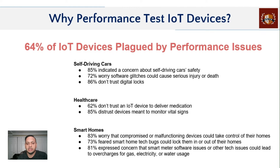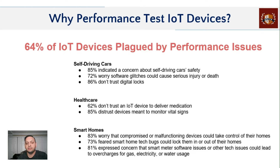For smart homes, 83% of users have expressed concern that the device could malfunction completely and they might lose control of their home. Since it's an internet-based device, there's always a possibility of hacking. Some have also shown concern about being locked out if complete access is given to external devices, and others worry that technical issues could lead to overcharges in utilities or water usage.